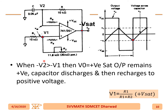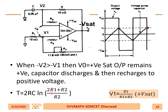When the capacitor output becomes such that -V2 becomes more than -V1 — since this is the inverting terminal — the output becomes +Vsat. V2 becomes more than V1, and V1 is now given by R1 divided by (R1 + R2) times +Vsat. The total time period for one cycle is given by 2RC × ln[(2R1 + R2) / R2].